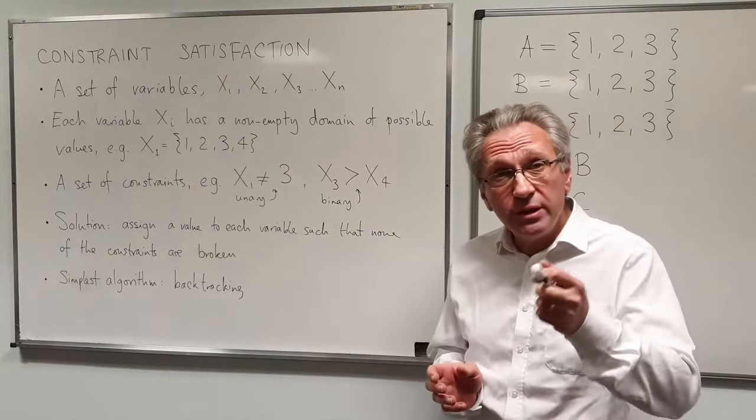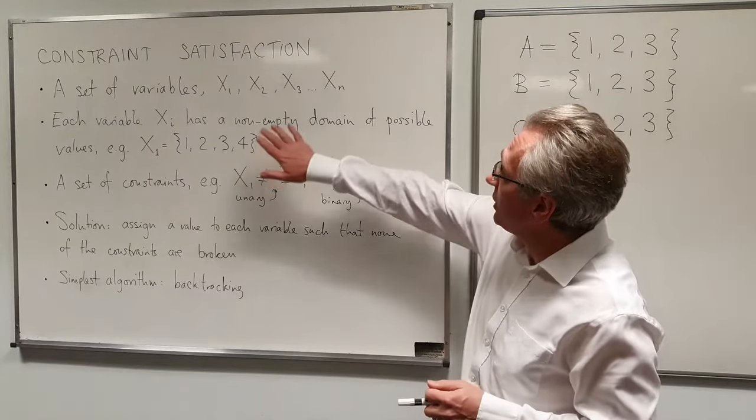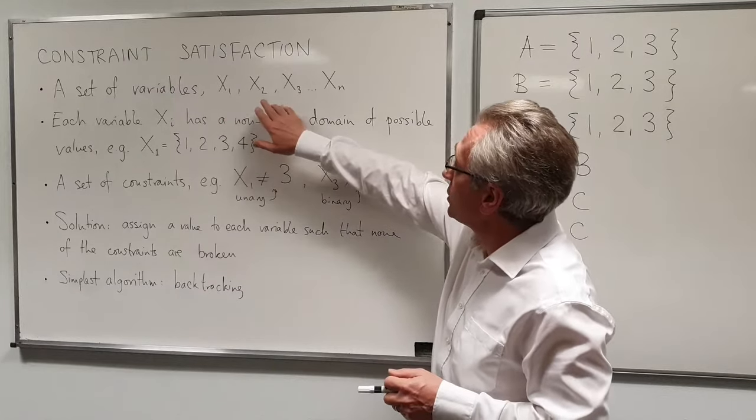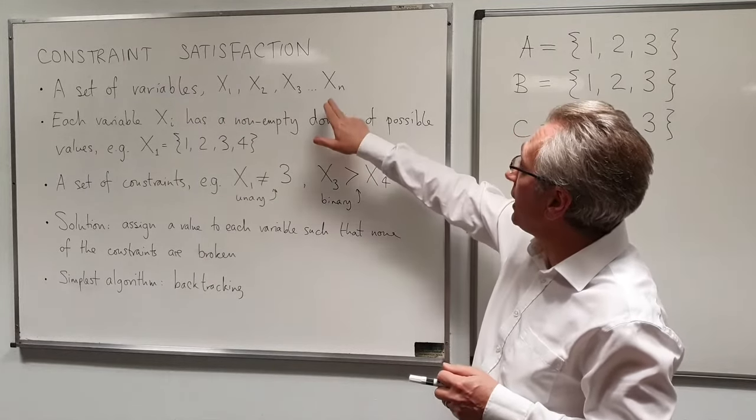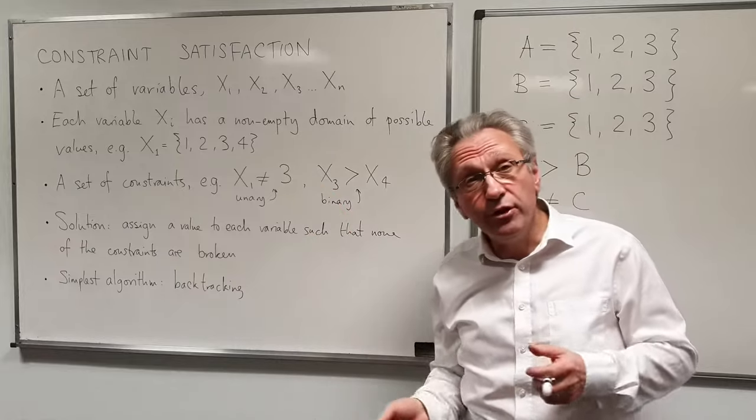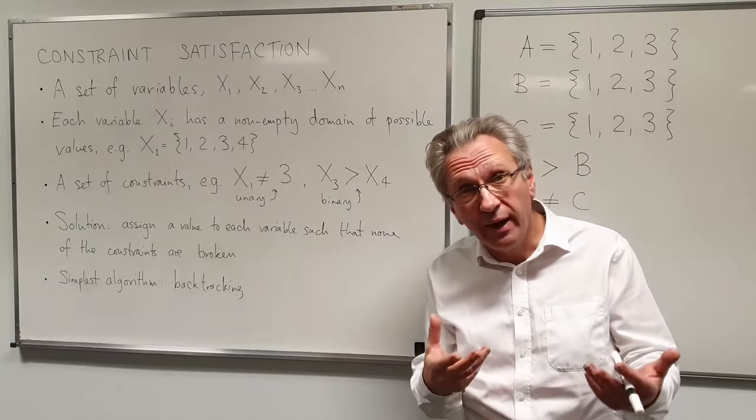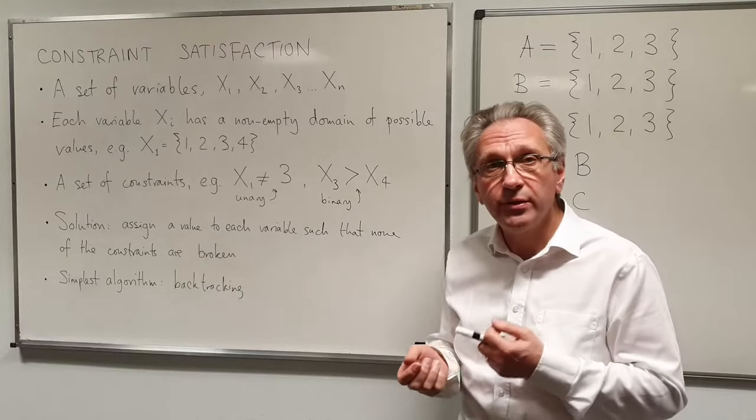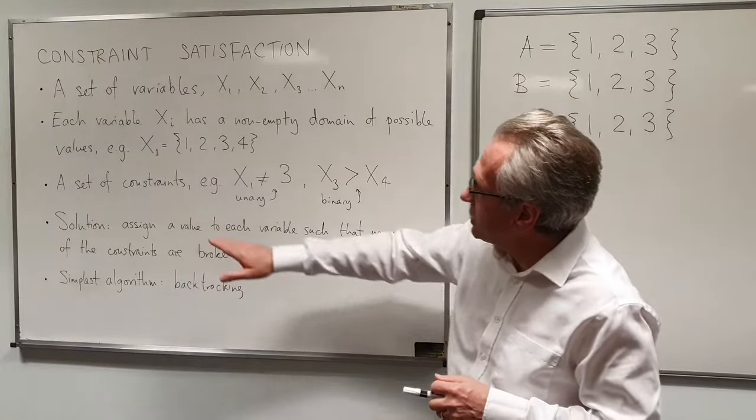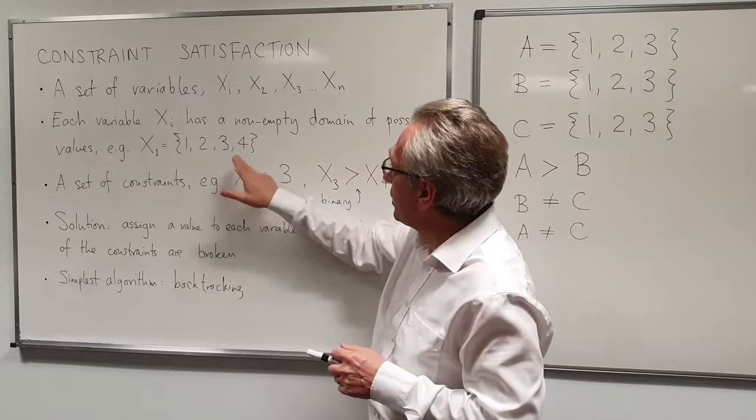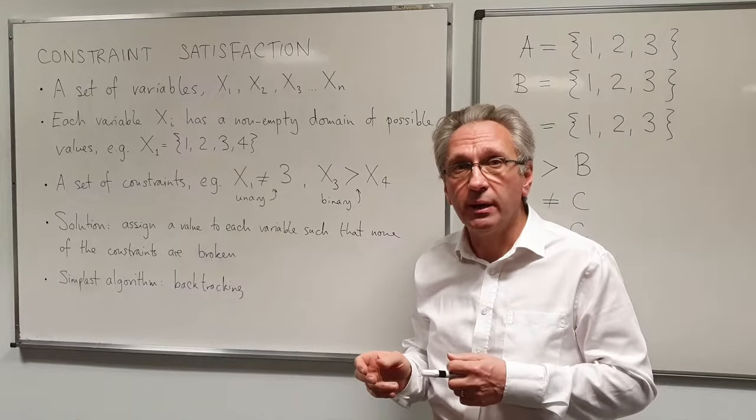So in a constraint satisfaction problem, we have a number of variables x1, x2, x3, up to xn, and every variable has a number of choices that you can make for the value of that variable, and we call that the domain. So here we see x1 can have the value 1, 2, 3, or 4. That's called its domain.